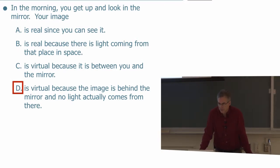So A is wrong. It is a virtual image coming from a mirror, so A and B are not correct. We have to choose between C and D.